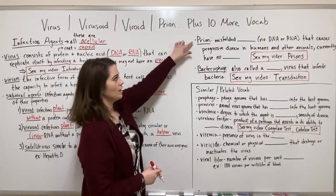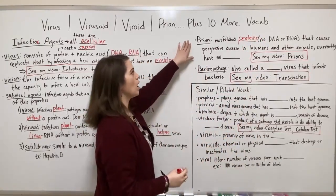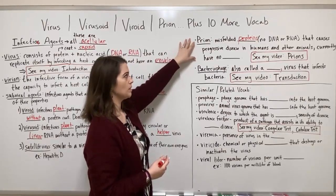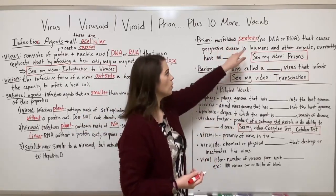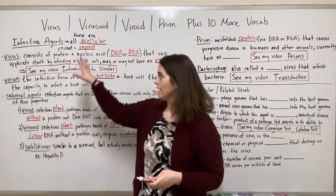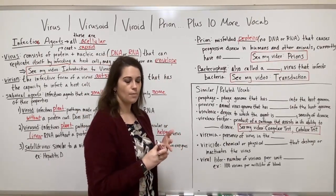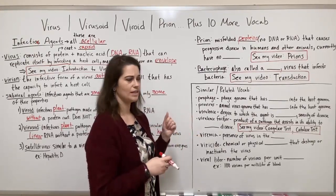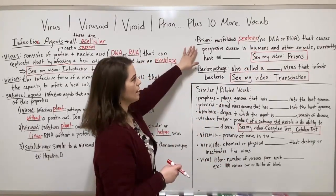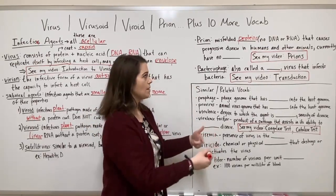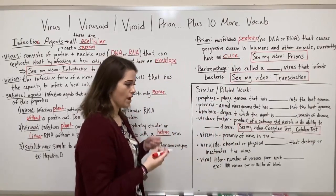Next, let's talk about prions — misfolded proteins. This discovery really rocked the scientific world; for a long time scientists believed prion diseases were caused by an undiscovered virus. Prion diseases include Creutzfeldt-Jakob disease, bovine spongiform encephalopathy (mad cow disease), and Kuru. Prions cause progressive disease in humans — meaning getting worse with time — and as of now there is no cure for any prion disease, making them ultimately lethal.